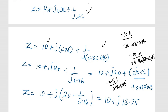So if I bring it here, I will factorize out j into 20 minus 1 divided by 0.16.